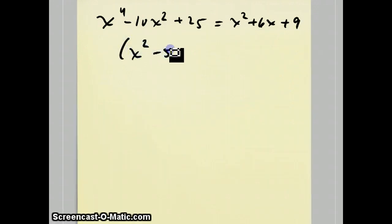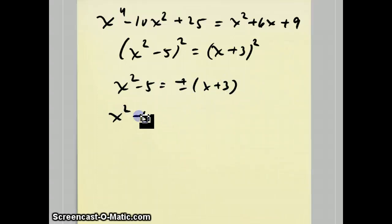Also notice that in this equation, both sides happen to be perfect squares. The left side is (x^2 - 5)^2. And the right side, b^2 - 4ac also equals 0, so that one factors to (x + 3)^2. Then you can take the square root of both sides.